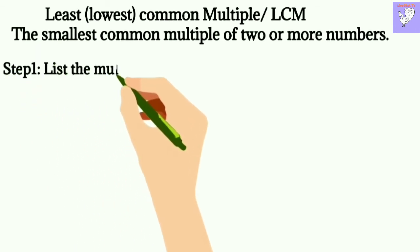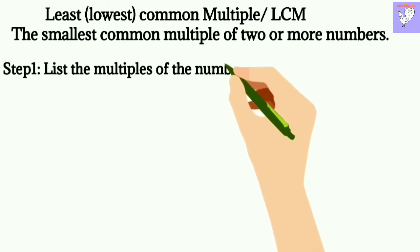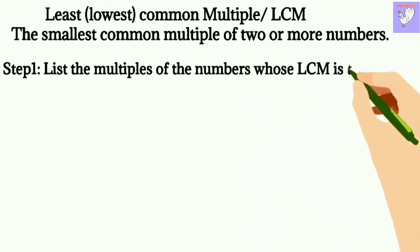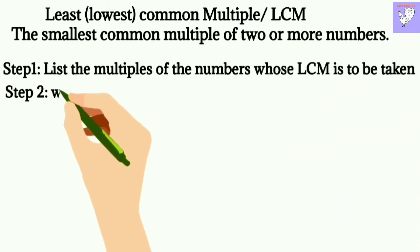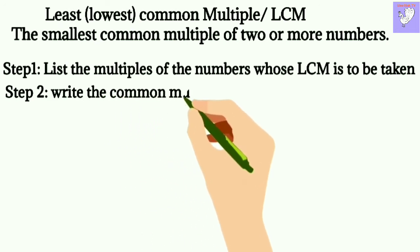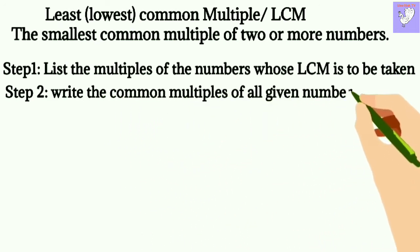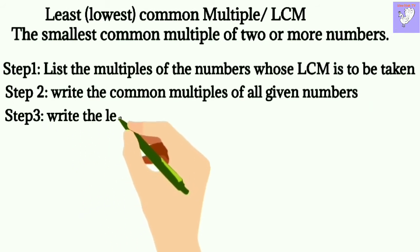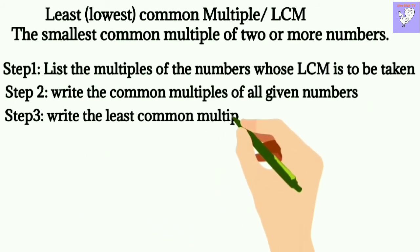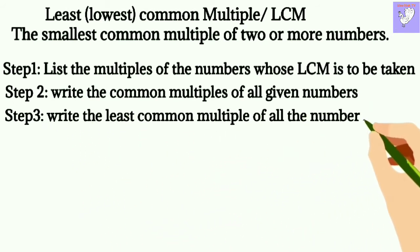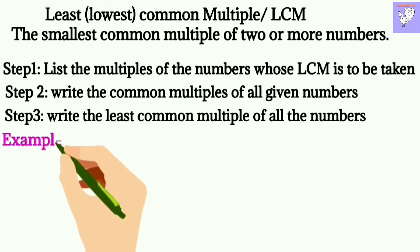So there are some steps. Step 1: List the multiples of the numbers whose LCM is to be taken. Step 2: Write the common multiples of all the given numbers. Step 3: Write the least common multiple of all the numbers.